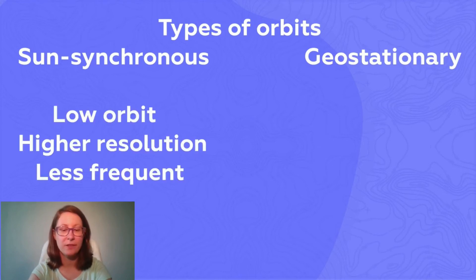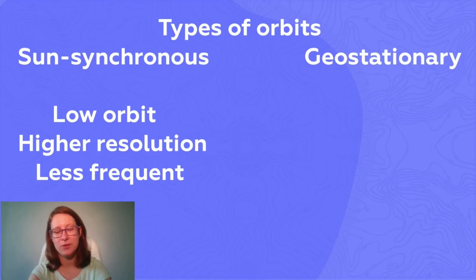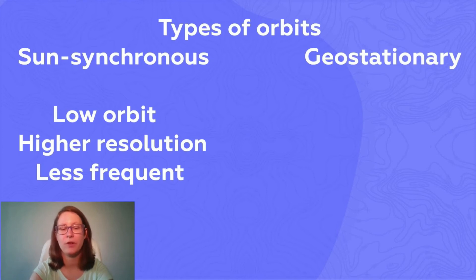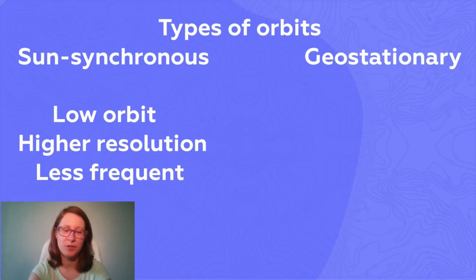Sun-synchronous low-orbit satellites allow us to get high-resolution imagery, but as they can only capture a narrow swath of the surface, it can take days between imaging the same area.